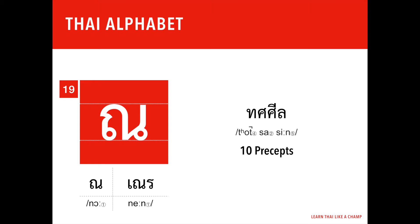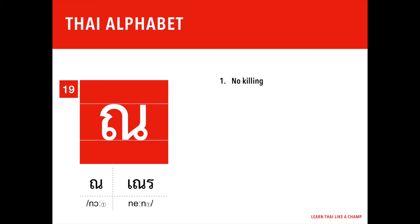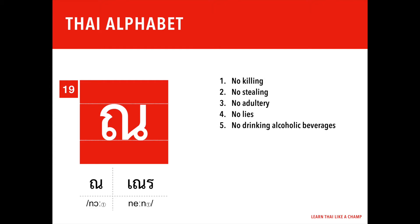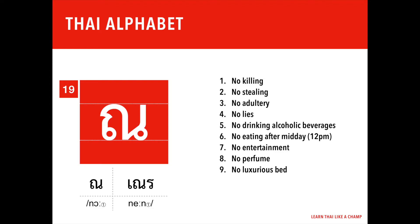Novice monks have to follow 10 rules, and those rules are: no killing, no stealing, no adultery, no lies, no drinking alcoholic beverages, no eating after midday, no entertainment — which means no singing, no dancing, no listening to music, no watching TV series — no perfume or cosmetics, no luxurious sleeping place, and no accepting silver or gold, which also means money.